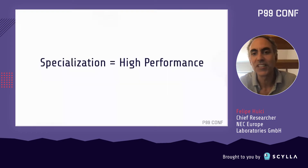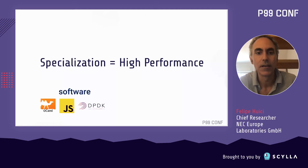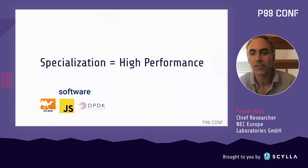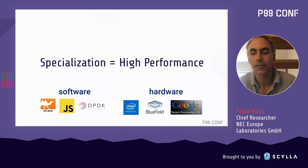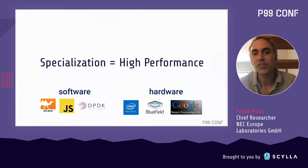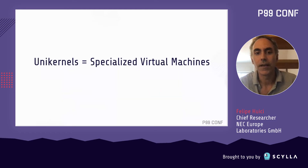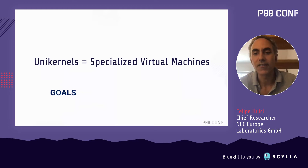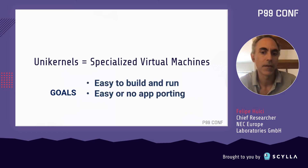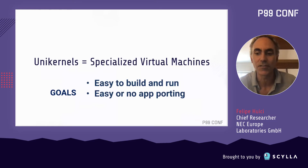One really good way to obtain high performance is through specialization — that can be in terms of software, where you can build fully customized stacks to run certain languages such as OCaml or JavaScript, or in hardware where we're increasingly seeing cards dedicated to particular workloads like AI workloads. In the field of virtual machines, specialized virtual machines are called unikernels, and the goals of unikernels are basically three: they should be easy to build and run, there should be easy or no application porting, and of course they should provide great performance.